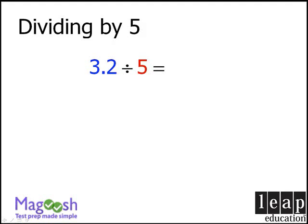So, to perform this division, we're going to follow two steps. Our first step will be to take our dividend of 3.2 and double it to get 6.4. Our next step will be to take our decimal point and move it one space to the left to get 0.64.